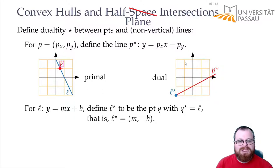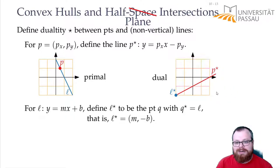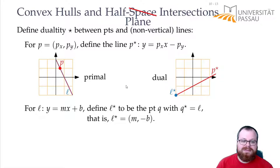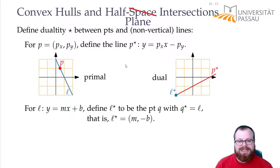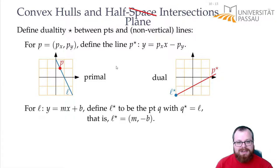So we have this duality of both types. If I have a point here, that gives me a line in the dual. If I have a point in the dual, that gives me a line in the primal. So the primal is the dual of the dual — which is a bit strange, but we will soon see what this helps us. In the next part, we will see a very nice application of why this is helpful.